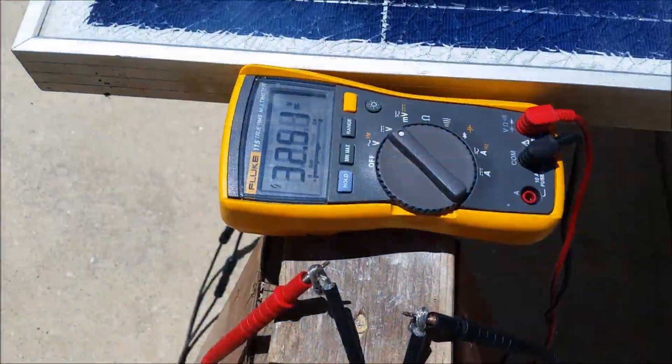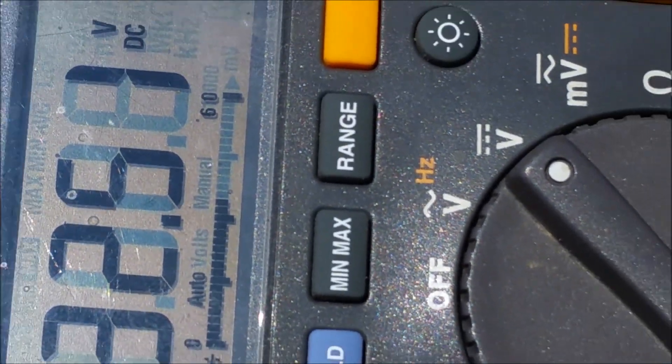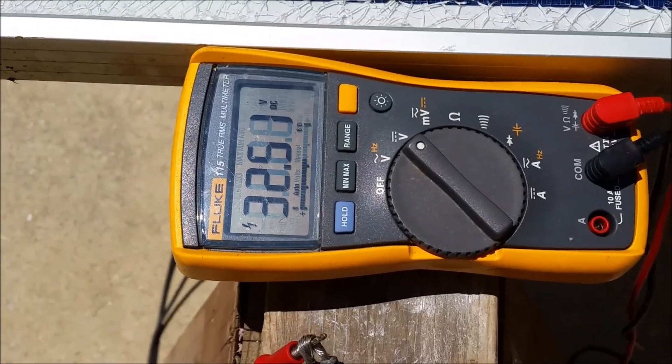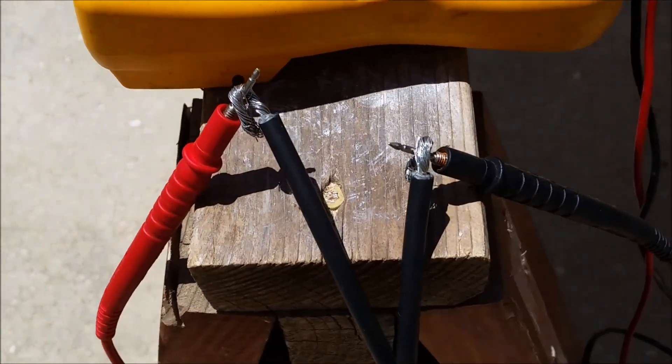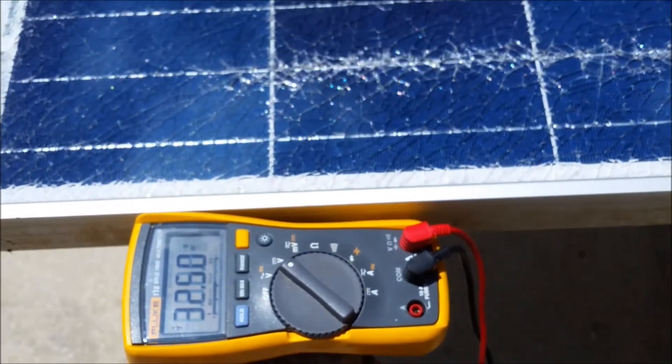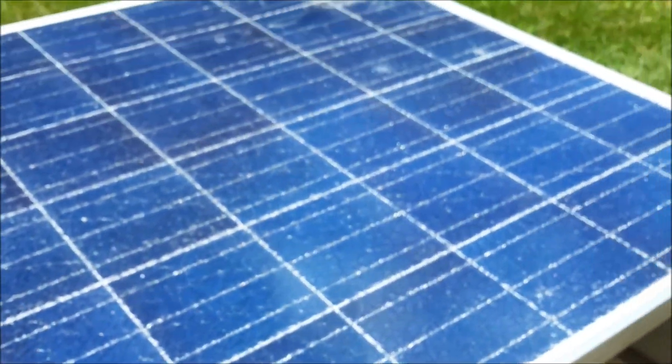So this is the open circuit voltage before I applied any sealant whatsoever. And I have to say, I forgot to record the current. I actually put it on paper, but I forgot to make a video of it. So you're going to have to trust me that it was about 7 amps or 3.4, 3.5 millivolts across the shunt.